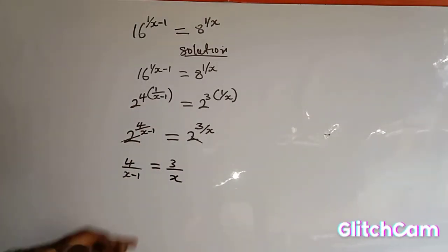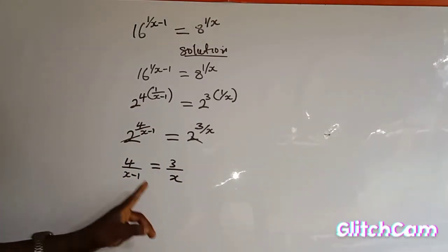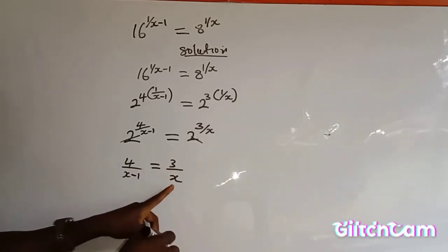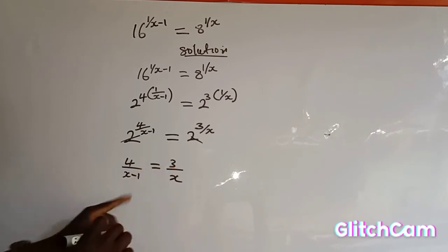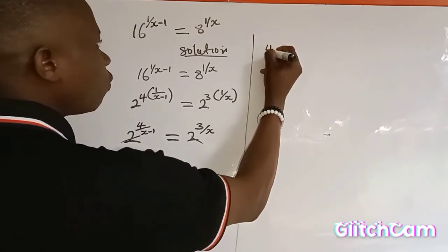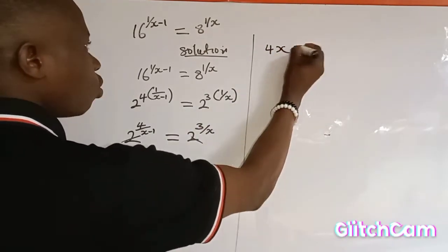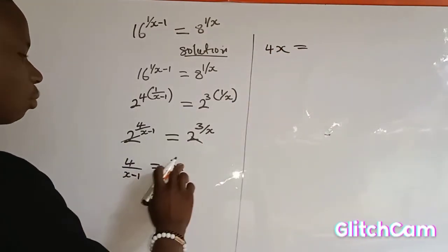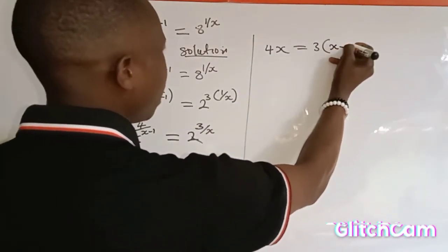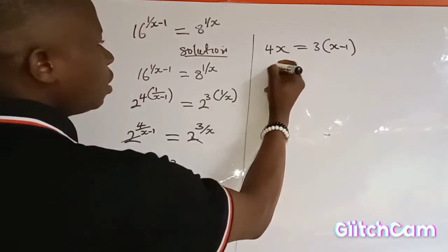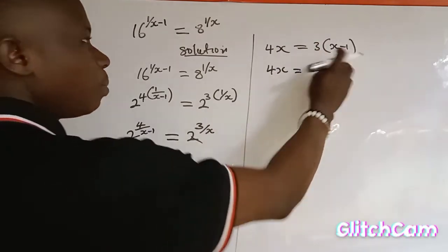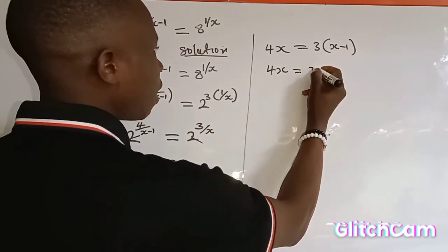When you have an equation in this form and need to find the value of s, we cross multiply. Using cross multiplication: 4 multiplied by s gives 4s, which is equal to s minus 1 multiplied by 3, giving 3 multiplied by s minus 1.